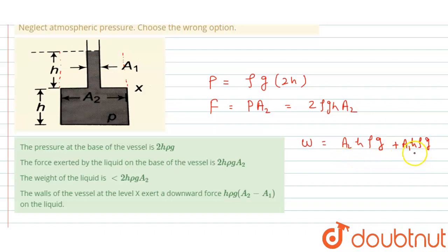This is less than 2 into - this equals ρgh into A1 plus A2. And A1 plus A2 is less than 2A2. H, ρ, g are the same, but here 2A2 and A1 plus A2 is less than 2A2 because A1 is less than A2. So this is a correct option. Weight of the liquid is less than this.